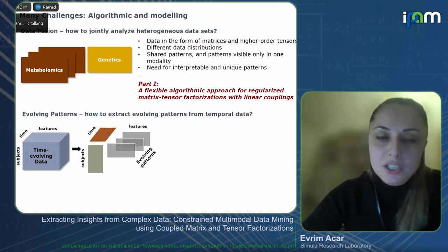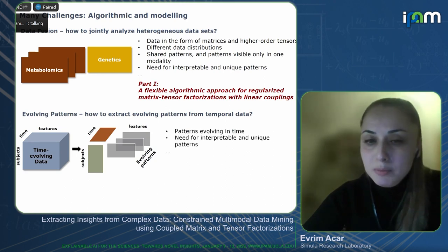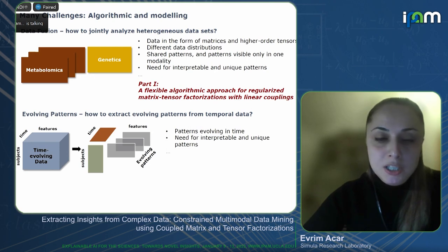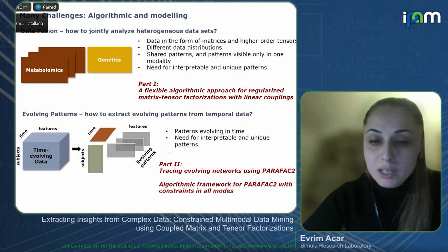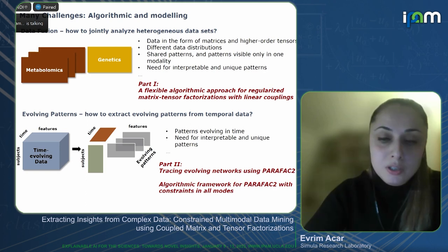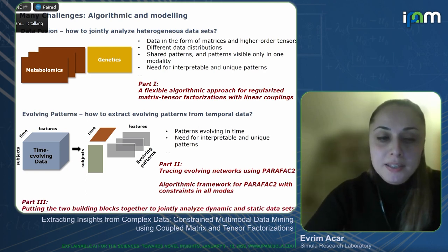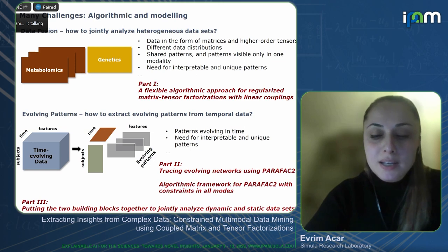The second set of challenges is due to the analysis of time-evolving data — how to find underlying patterns and understand how they change in time. We will discuss a tensor factorization model called PERFECT2 to trace evolving networks and a flexible algorithmic approach for it. In the last part, we will put these building blocks together to jointly analyze dynamic and static data sets.